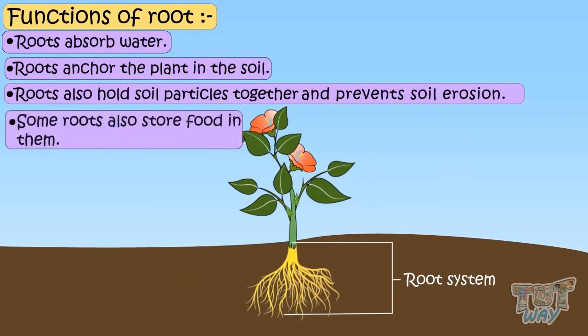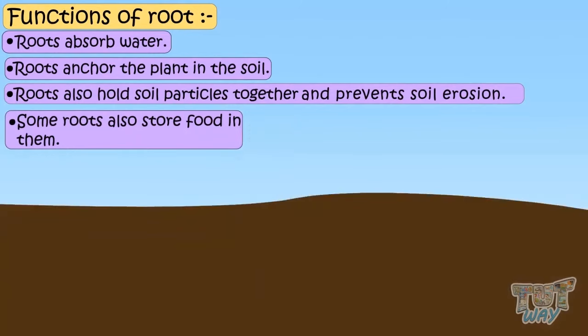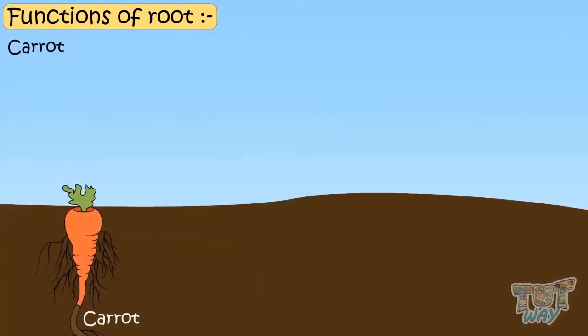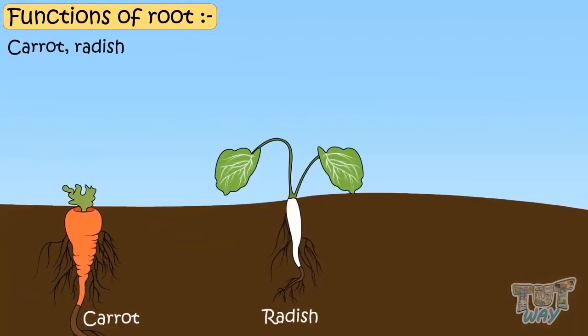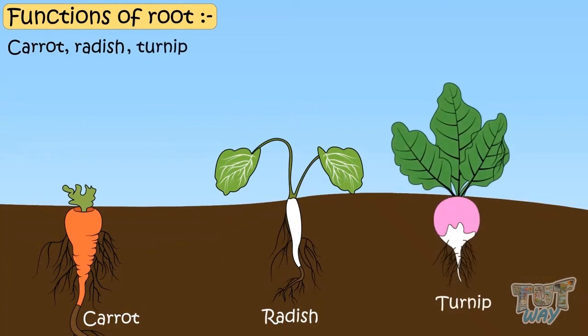Some roots also store food in them, like carrots, radish, and turnips, which are tap roots that we eat.